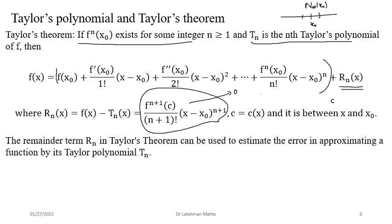The remainder term in Taylor's theorem can be used to estimate the error in the process of approximating a function by its corresponding Taylor polynomial. When we approximate a given function by a Taylor polynomial, error arises because of the remainder term. For finite n, the approximation has an error contribution that we call eₙ. We need to find what error we are committing when approximating a function by an n-degree polynomial.